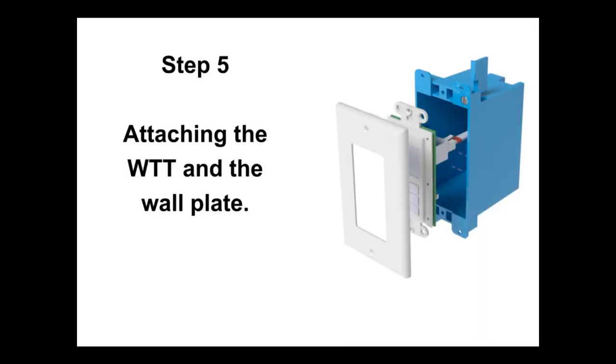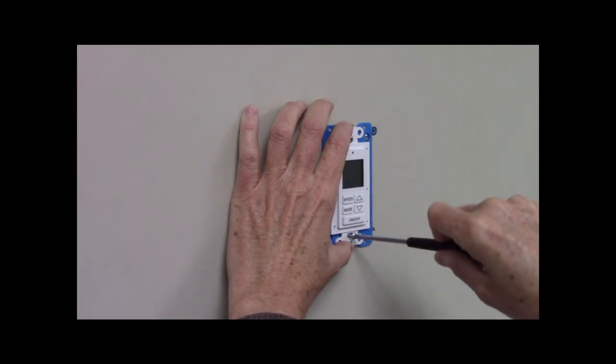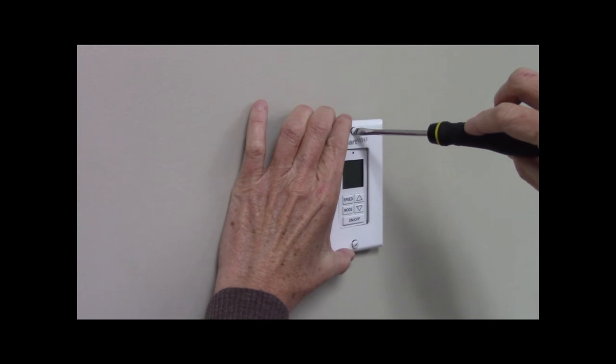Step 5 is attaching the WTT and the wall plate. First, attach the WTT to the plastic gain box, then attach the wall plate to the WTT.